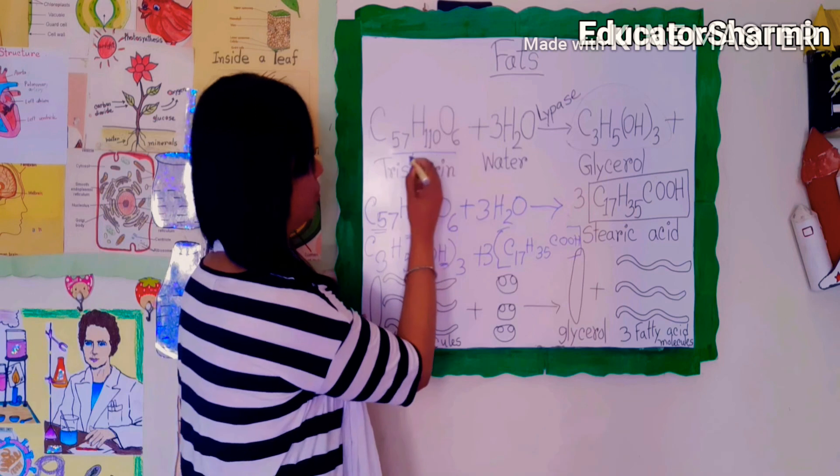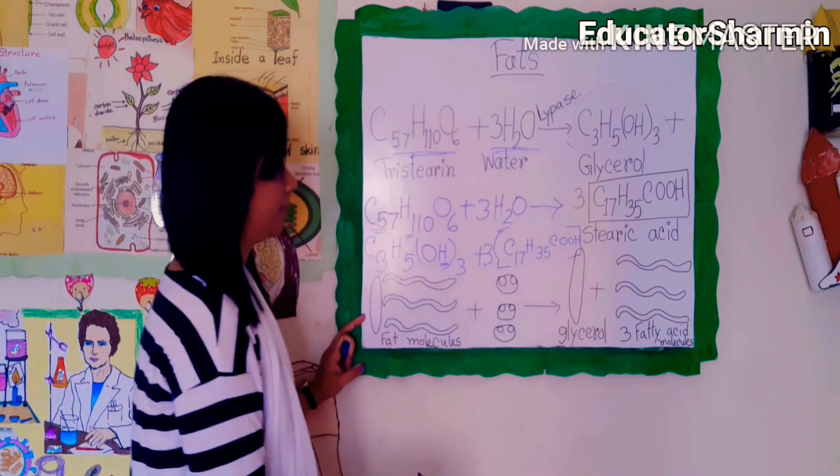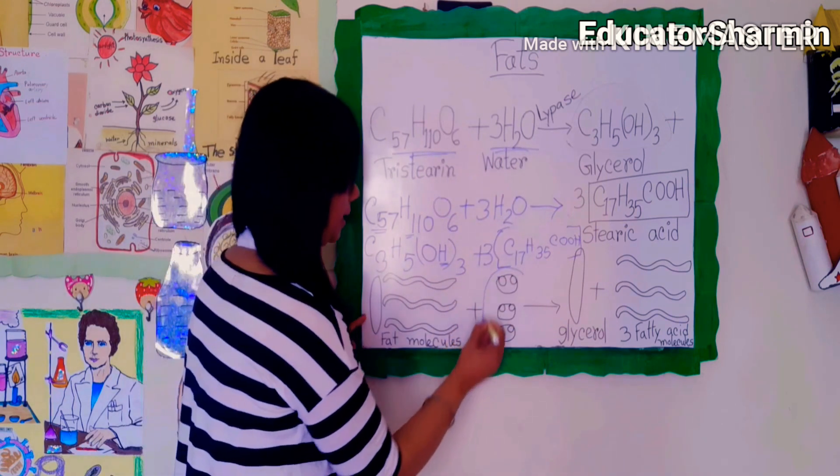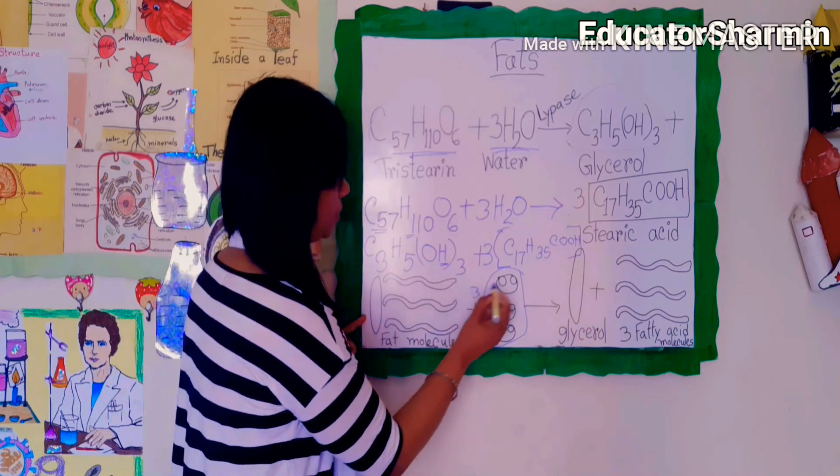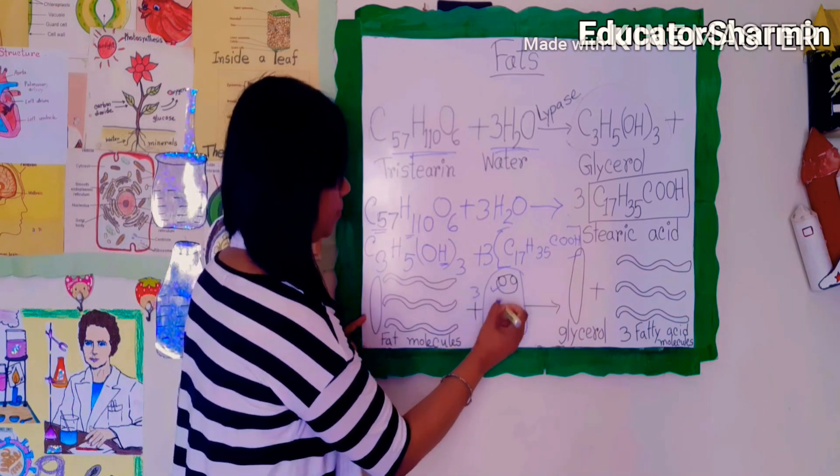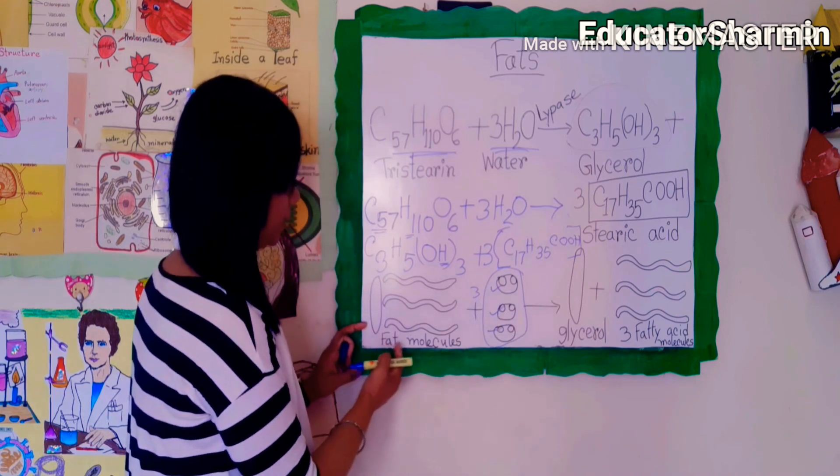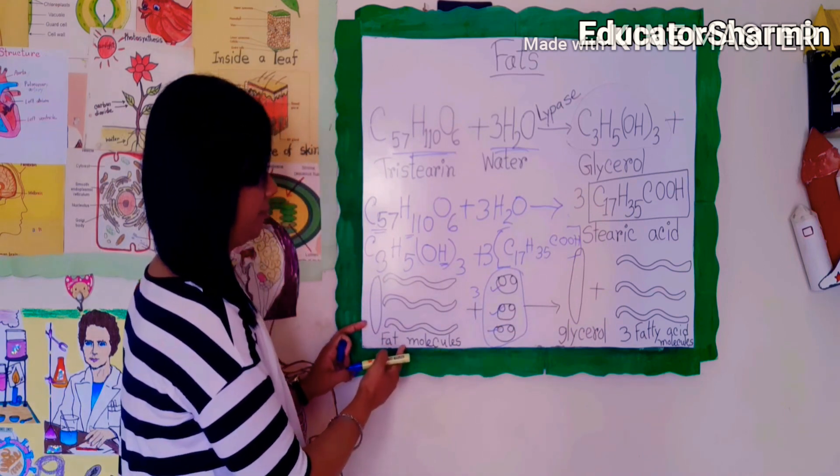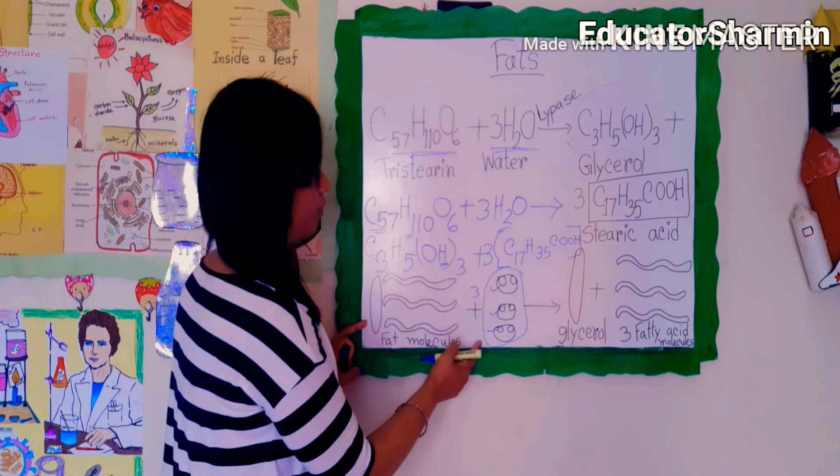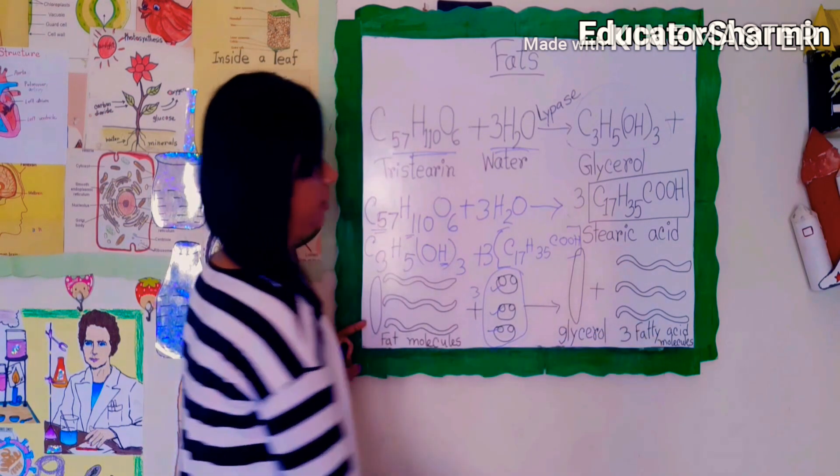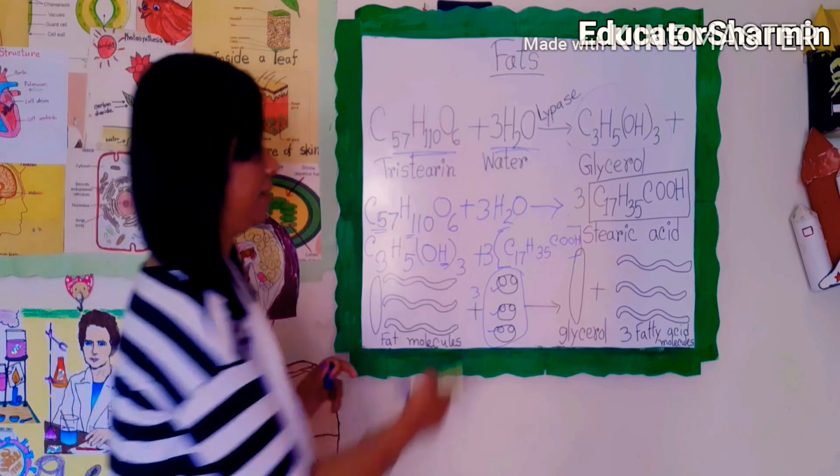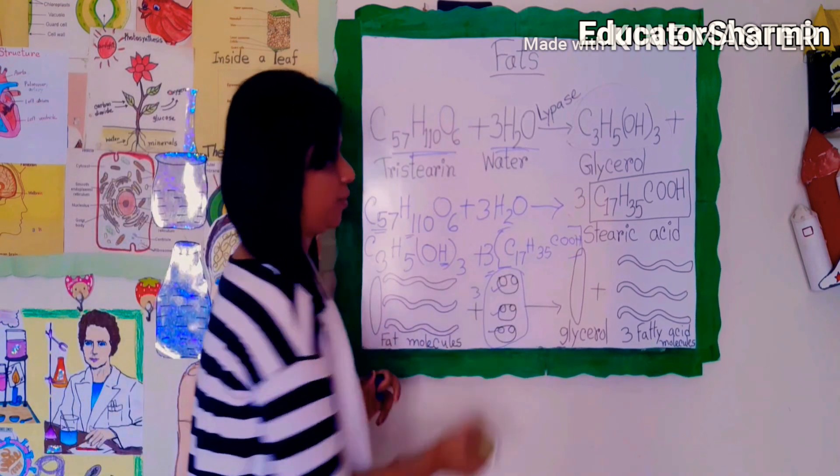If you calculate, you can find these values. Here are the three water molecules - one, two, three - and here is the fat molecule. Fat molecules and water molecules produce glycerol and three fatty acid molecules.